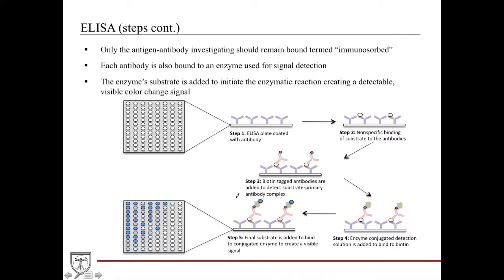This is a very interesting concept. But you have to understand that only the antigen-antibody investigating should remain bound to the immunosorb. You need to wash it off. When I explain that Western blots and ELISA undergo a washing technique, it's essentially washing this membrane, washing this plate because you need to make sure that you're getting the most specific binding possible so that your signal detection is as accurate as possible.